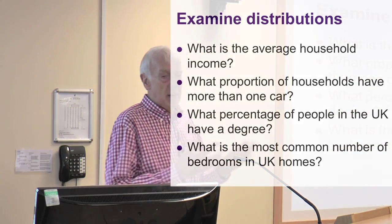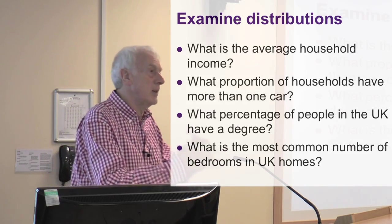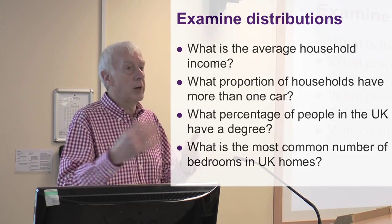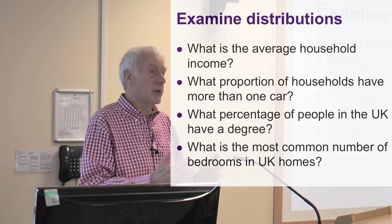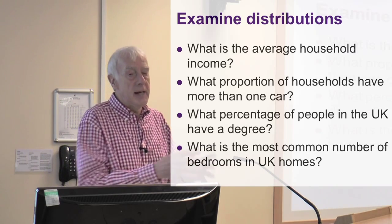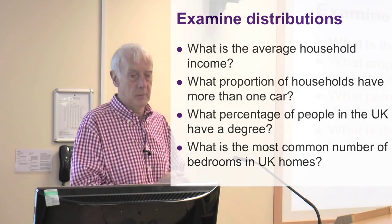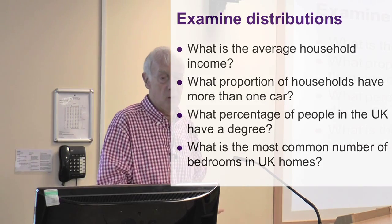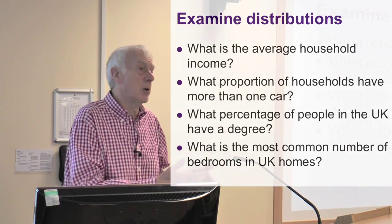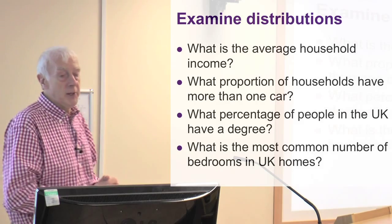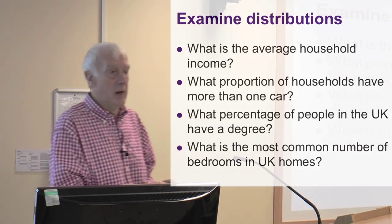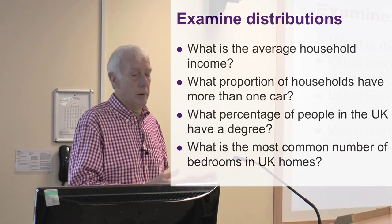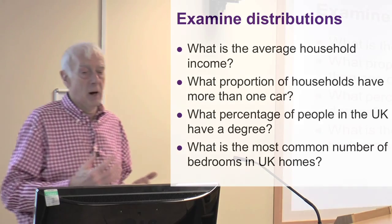I've emphasised this idea of examining distribution. A variable — you're now familiar with the notion of a variable — is something which has a number attached to it that varies across different respondents. What's a distribution? Well, a distribution is how that variable is distributed across the population or sample you're looking at. How does it vary? And what can you say about its variability and other aspects? Here are some typical questions you might ask about distributions: What's the average household income? What proportion of households have more than one car? What percentage of people in the UK have a degree? What's the most common number of bedrooms in UK homes?